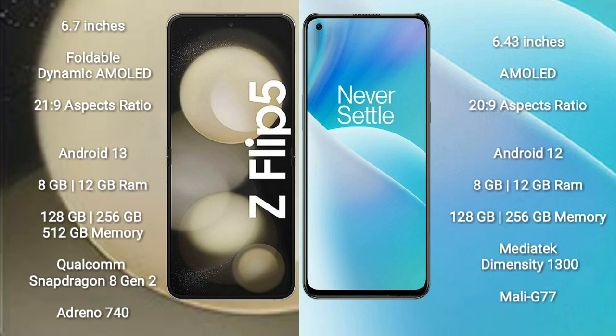OnePlus Nord 2T comes with 8GB or 12GB RAM and 128GB or 256GB internal storage. It features a MediaTek Dimensity 1300 processor and Mali-G77 GPU.